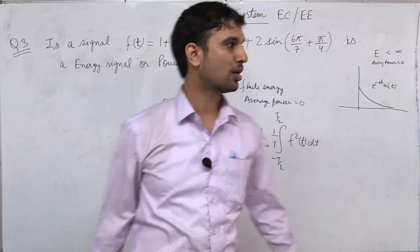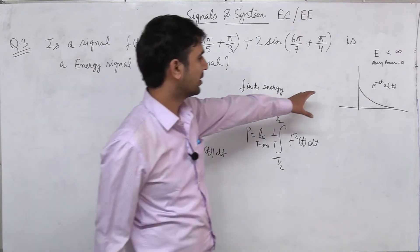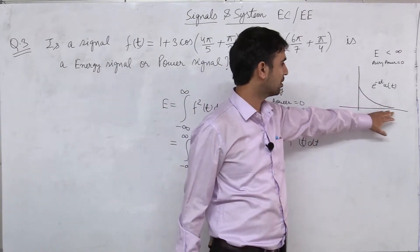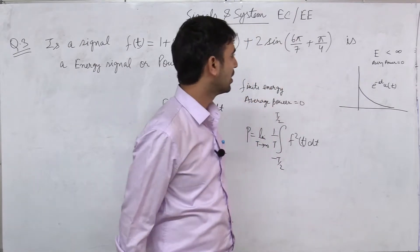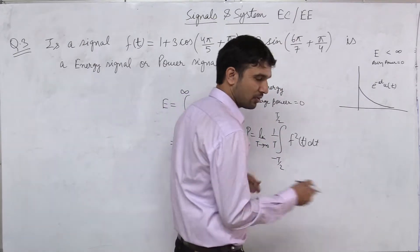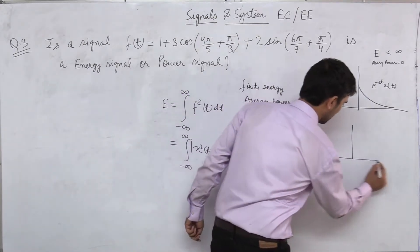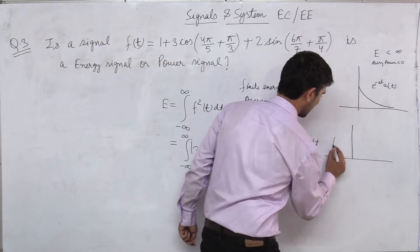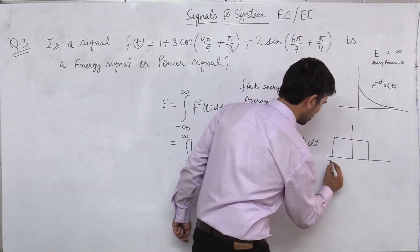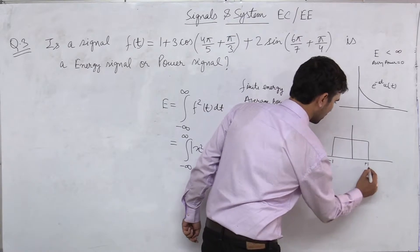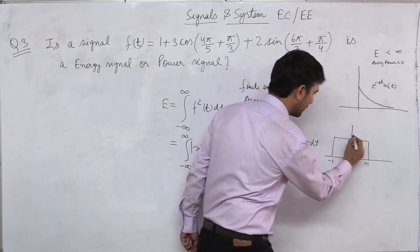Those signals which have finite amplitude and finite duration are always energy signals. For example, let us take an example: find the energy of this signal. This is a finite duration signal and finite amplitude.